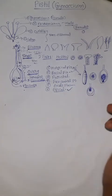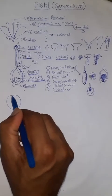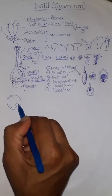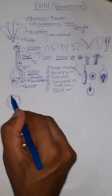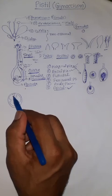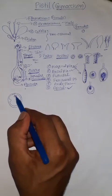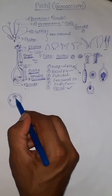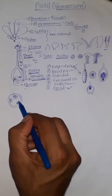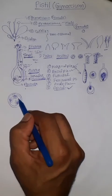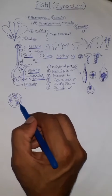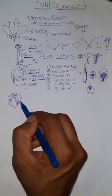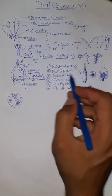Now we will see parietal, free central, and axial placentation. In parietal placentation, we cut the ovary in a transverse manner. The ovules are attached on placenta distributed all over the inner surface of the ovary wall. There is one placenta each on multiple positions around the inner surface, with ovules attached to each placenta.